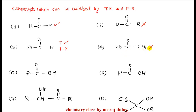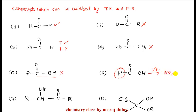Next example: another ketone — it will not react. Fifth example: carboxylic acid — its oxidation will not occur with Tollens' reagent. Next: formic acid — formic acid has one oxidizable hydrogen, so it will be oxidized by both Tollens' and Fehling's, and will be converted to CO2 plus elemental silver, causing mirror formation in the solution.